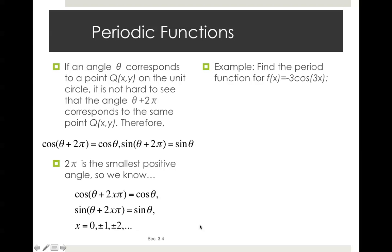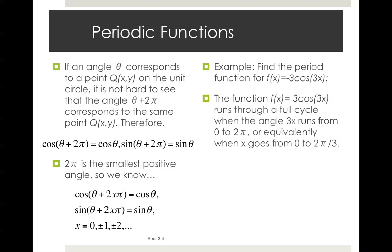Example: find the period function for f(x) equals negative 3 cosine 3x. The function f(x) equals negative 3 cosine 3x runs through a full cycle when the angle 3x runs from 0 to 2π, or equivalently when x goes from 0 to 2π over 3. So the period of f(x) is then 2π over 3.